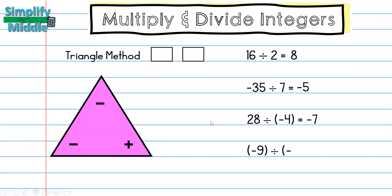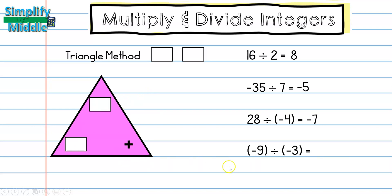Finally, negative 9 divided by negative 3: cover both negatives, which leaves the positive — so the answer is positive. Negative 9 divided by negative 3 equals 3. Same signs give a positive, which confirms the rule.